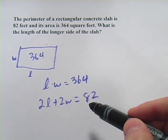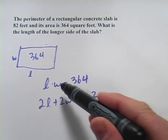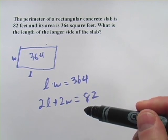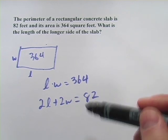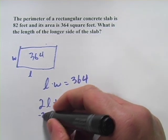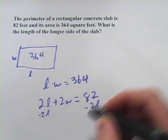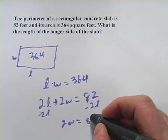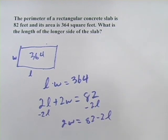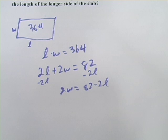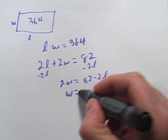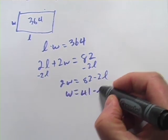Now we have two equations. This is a system of equations, two equations, two variables. We're going to solve this perimeter equation for one of them. I think I'm going to solve it for W by subtracting 2L from both sides. So we get 2W equals 82 minus 2L. And while I'm at it, I can simplify that a little bit. I can divide everything by two. So this becomes W equals 41 minus L.